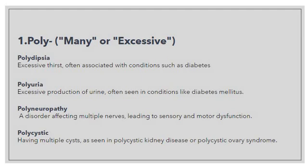Polydipsia means excessive thirst, often associated with conditions such as diabetes. So when a person is suffering from polydipsia, they will suffer from excessive thirst. Whenever something is denoted as excessive, we will use the prefix 'poly'. You can see we are using 'poly' here — poly is denoting excessive thirst.